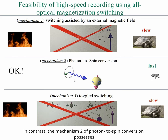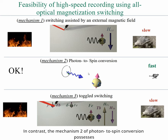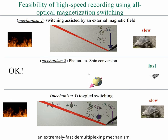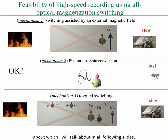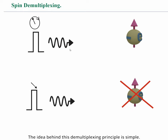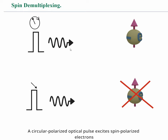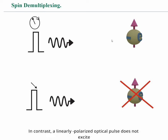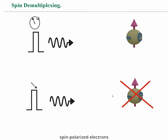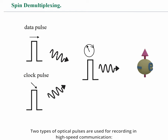In contrast, mechanism 2 of photon-to-spin conversion has an extremely fast demultiplexing mechanism. The idea behind this demultiplexing principle is simple. A circularly polarized optical pulse excites spin-polarized electrons and therefore is recorded into the magnetic memory. In contrast, a linearly polarized optical pulse does not excite spin-polarized electrons and therefore has no influence on the magnetic recording. Two types of optical pulses are used for recording in high-speed communication: the data pulse and the clock pulse.